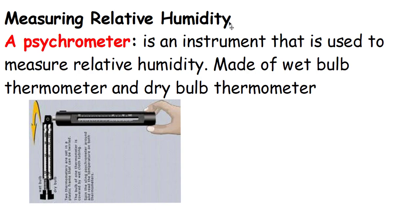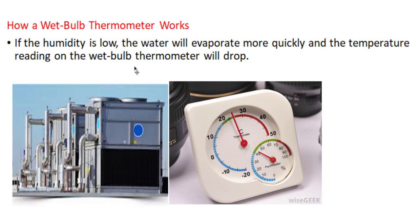Measuring relative humidity: we use a device called a psychrometer. A psychrometer is an instrument used to measure relative humidity, made up of a wet bulb thermometer and a dry bulb thermometer.